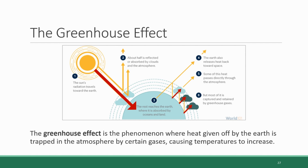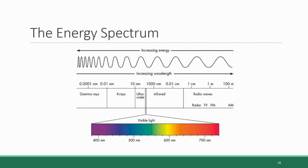How greenhouse gases perform this trapping function is an important question. Why do they trap the heat energy going out rather than the sunlight energy coming in? To answer this, we need to briefly learn about the energy spectrum. All light and energy travels in the form of waves, and the wavelength — how frequently the wave goes up and down — determines how much energy is contained. A more frequent up-and-down pattern has more energy compared to a more gentle, infrequent pattern. We classify energy into different types based on wavelength, including gamma rays, x-rays, ultraviolet light, visible light, infrared, and radio waves.